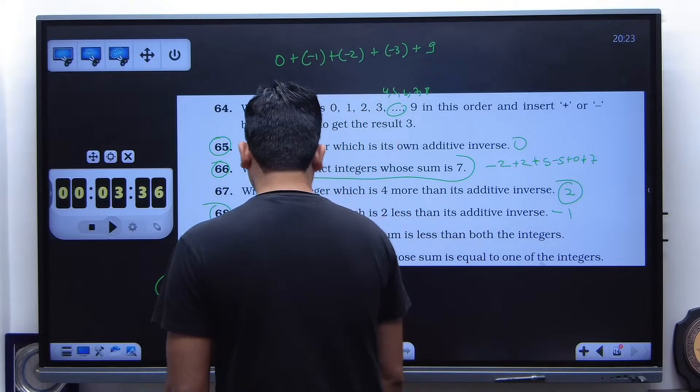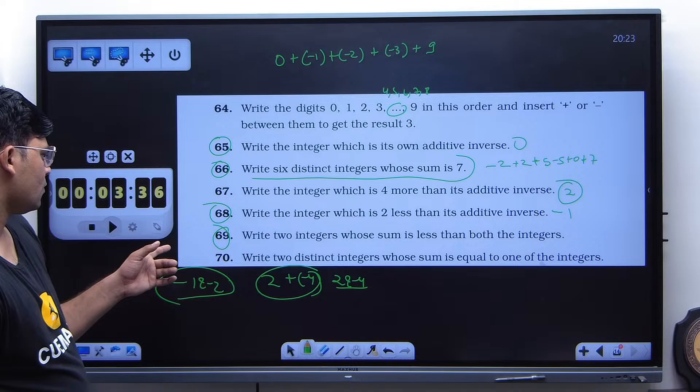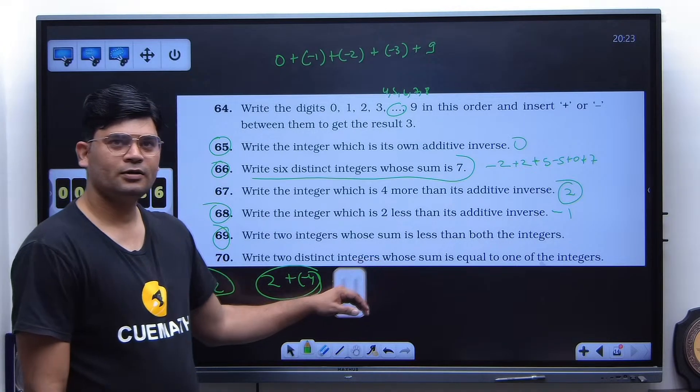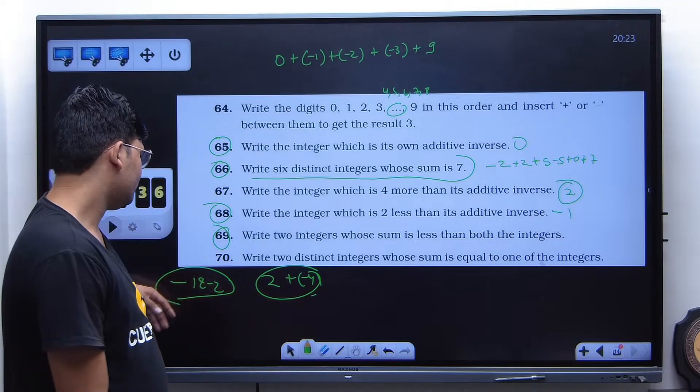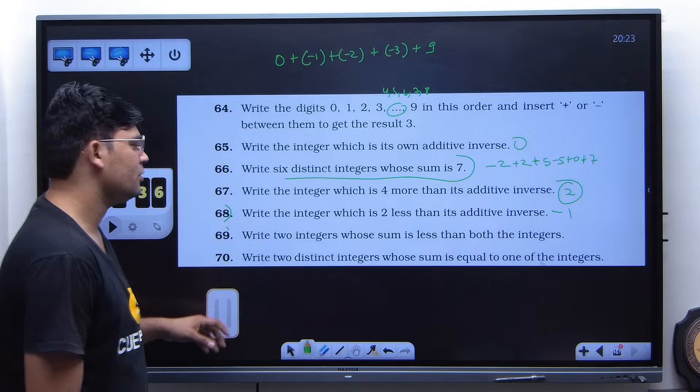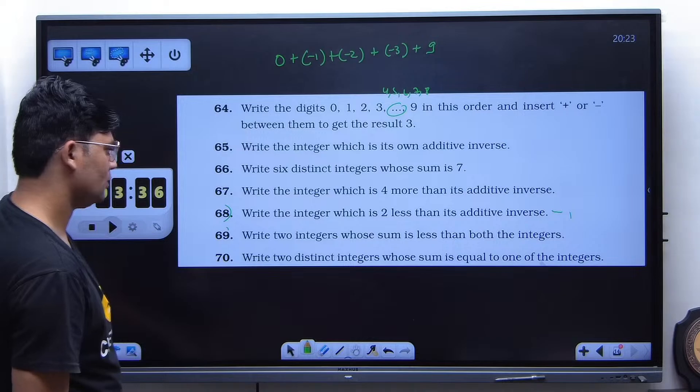The last one, I don't think it's right. No, no, no, it's the 70th. Yeah, so it's not right. Yeah. This is not correct. Write two distinct integers whose sum is equal to one of the integers. Yes, I don't know. It doesn't make sense.